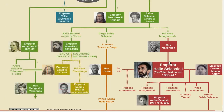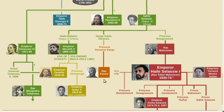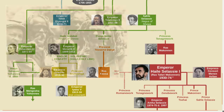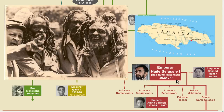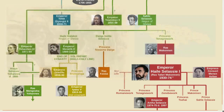Ras Tafari Makonnen is a member of the Solomonic dynasty via a female branch. There was actually another person with a more senior claim through a different female line, but he chose to support Ras Tafari Makonnen. So when Empress Zuditu died, Ras Tafari became Emperor Haile Selassie I, the most well-known emperor of Ethiopia and a dominant figure in African politics during most of the 20th century.